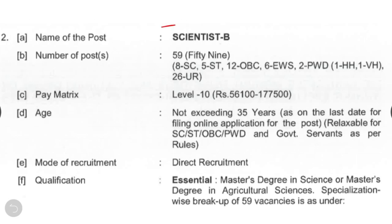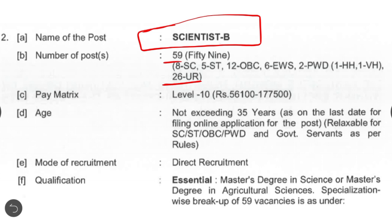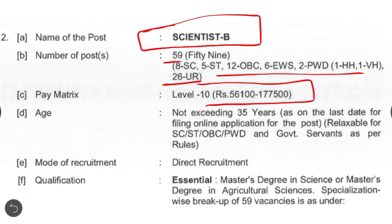The second post is Scientist B. In this case there are total 59 posts available — 26 for unreserved quota and remaining 33 are given according to reservation category. Pay scale for this post is from rupees 56,100 to 1,77,500. Age limit is 35 years as on the last date for online application, and mode of recruitment is direct recruitment.